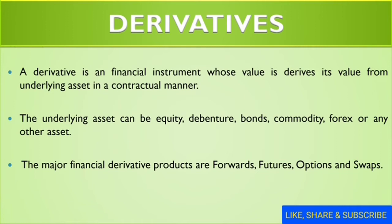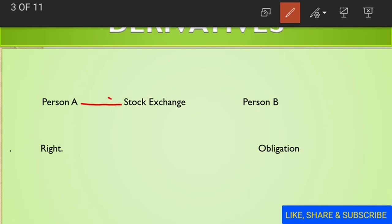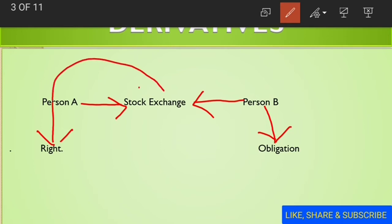The major financial derivative products are forwards, futures, options, and swap. A derivative is a tool or instrument for betting. In this lecture, we will study forwards, futures, and swap. I hope it is clear what an underlying asset is and what derivatives are.